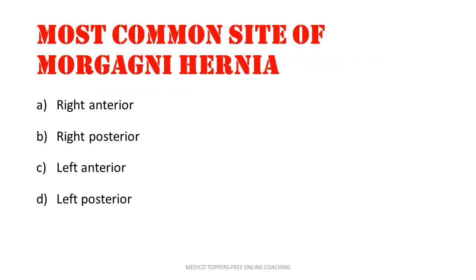Most common site of Morgagni hernia. The options are right anterior, right posterior, left anterior, and left posterior. The answer is right anterior. So Morgagni hernia — right anterior.